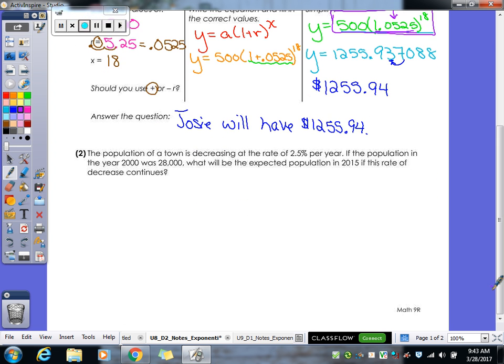All right, let's take a look at our next problem. So we have the population of a town is decreasing at a rate of 2.5% per year. If the population in the year 2000 was 28,000, what will be the expected population in 2015 if this rate of decrease continues? So let's make our little chart of the numbers we need to know. So what is our A? How many people do we start with? 28,000. Perfect. Our R would be 0.025. Again, we've got to move that two places to the left. And then our X? What would be 15? It would be 15. So we're going from 2000 to 2015. So our X would be 15.